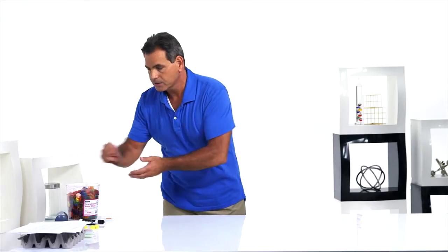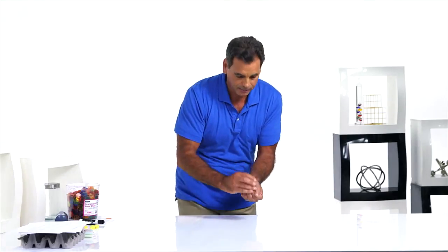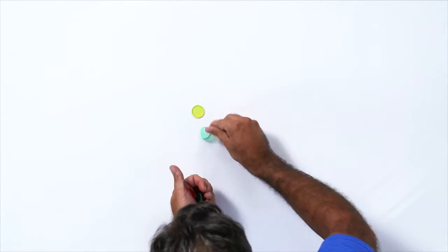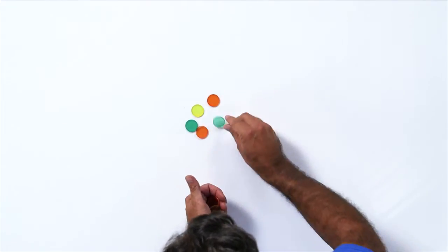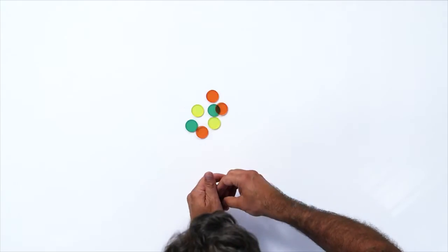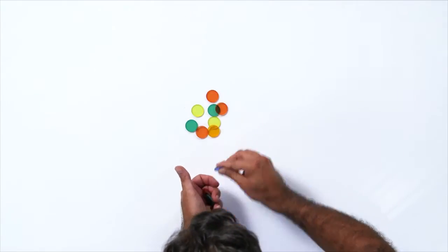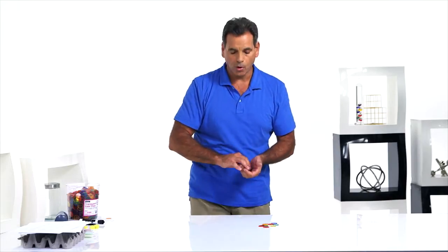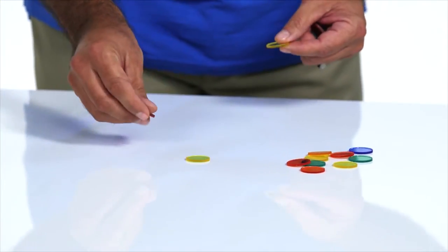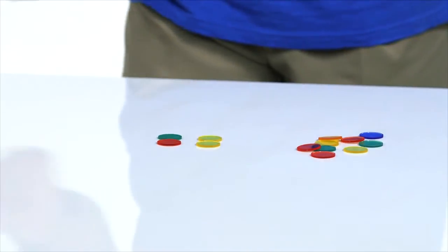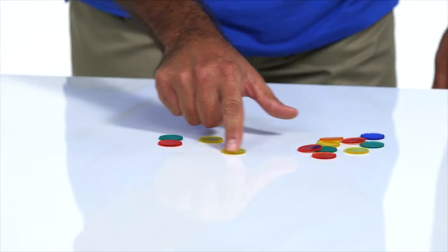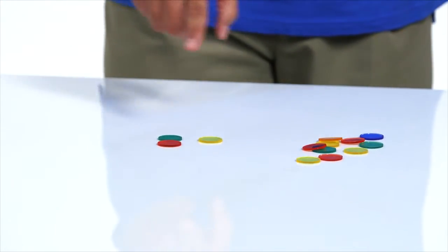9 and 4 can also be done with concrete objects, so we go from fingers to concrete objects. Count out 9. 1, 2, 3, 4, 5, 6, 7, 8, 9. Add 4 more. 1, 2, 3, 4. Make a 10. 10 and 3, 13.